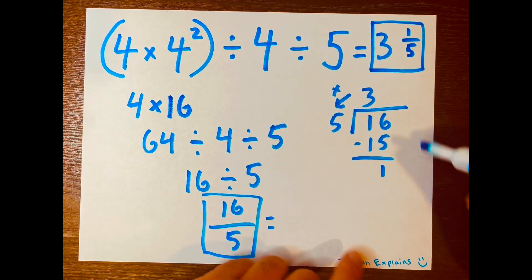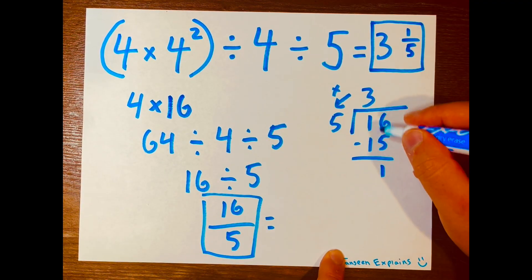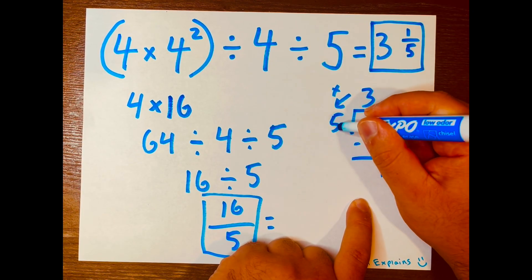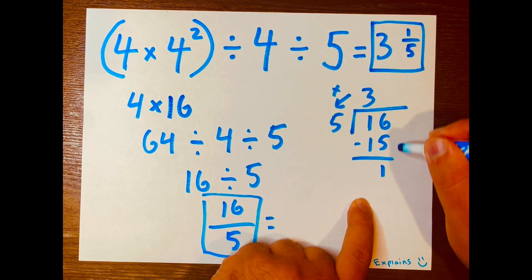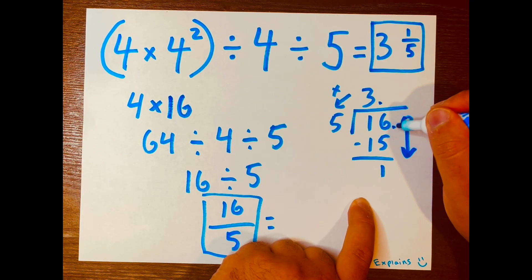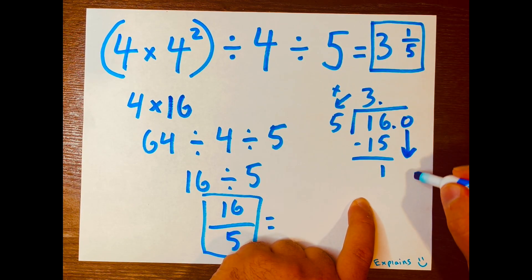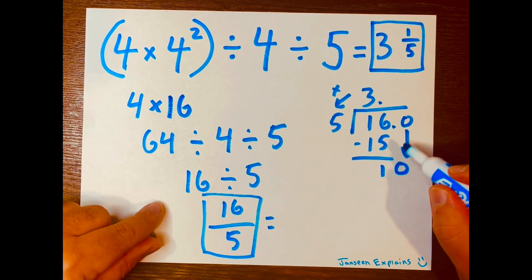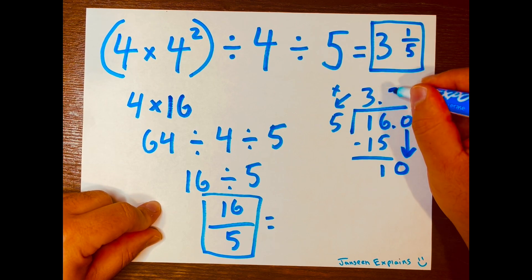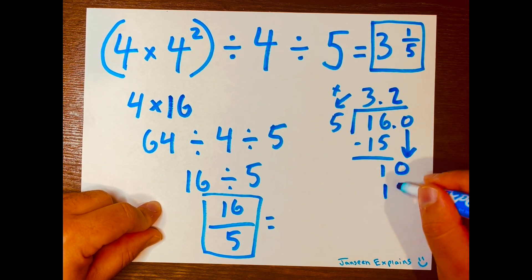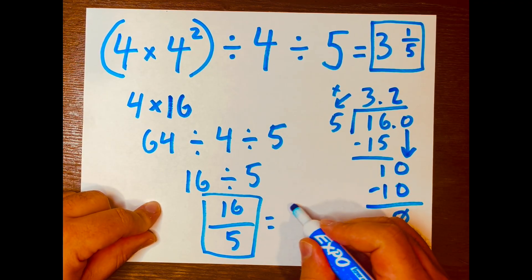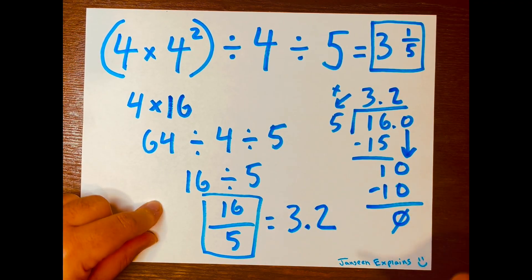And let's continue finishing up the division for our decimal answer. So how many times can five fit into one? You cannot, so we need to borrow a zero. So we're going to add a decimal after the 16 and the three, bring down the zero. Now we have 10. So how many times can five fit into 10? Two. So two times five is 10, and 10 minus 10 is zero. So your decimal answer is 3.2. And there you go.